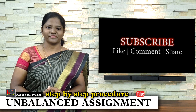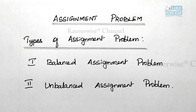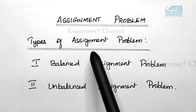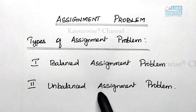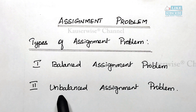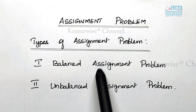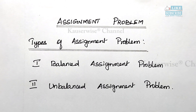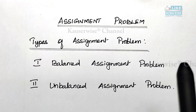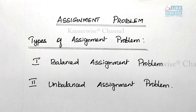Now let's get into the video. First, let us see the necessary information about assignment problem. In assignment problem, there are two different types: number one, balanced assignment problem, and number two, unbalanced assignment problem. The balanced type we have already seen in the previous video along with the algorithm. If you want to see that video, please see the description box to find the link.